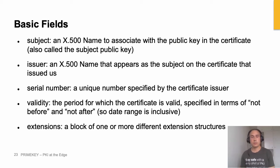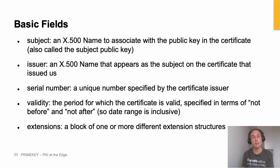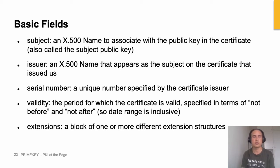A certificate contains an identity, a public key belonging to that identity, and that thing is signed by a certificate authority with the signature also in the certificate. In practice you have a few more fields. The subject is basically the identity — the name of the owner of the public key. Then you have the issuer, which is the name of the certificate authority that issued the certificate. Then you have the serial number, which uniquely identifies a specific certificate for a particular issuer and is used during revocation. You also have a validity period, consisting of two dates: a not-before date and a not-after date.